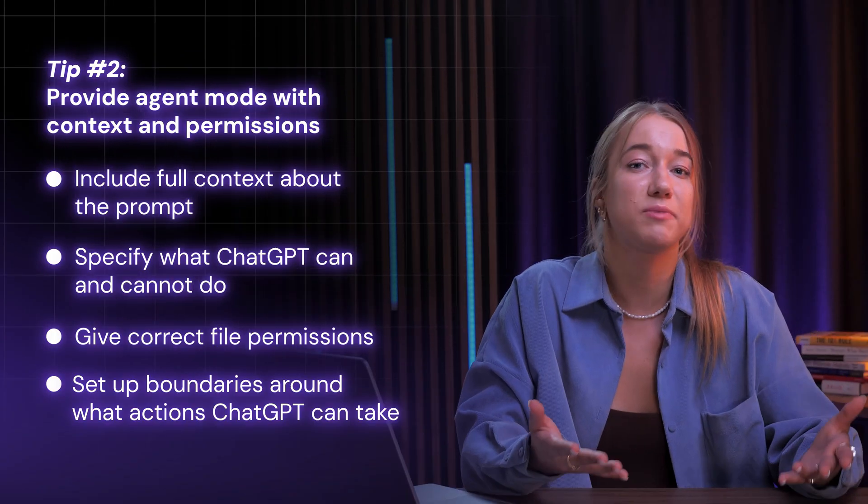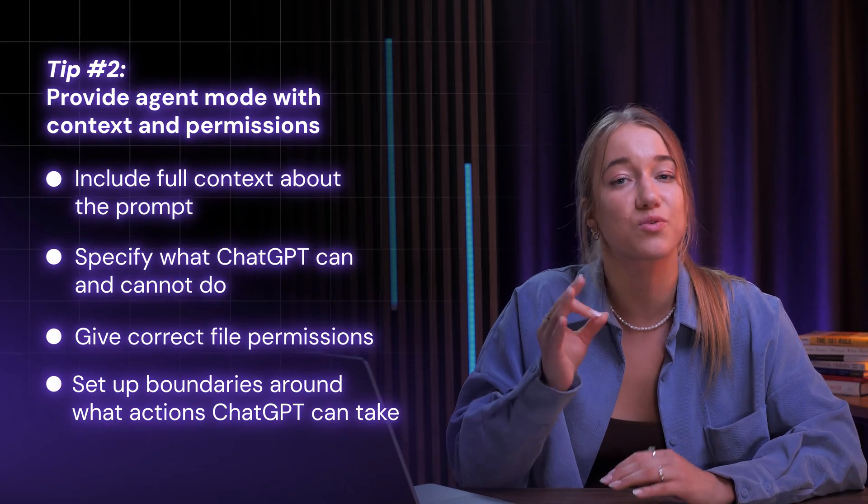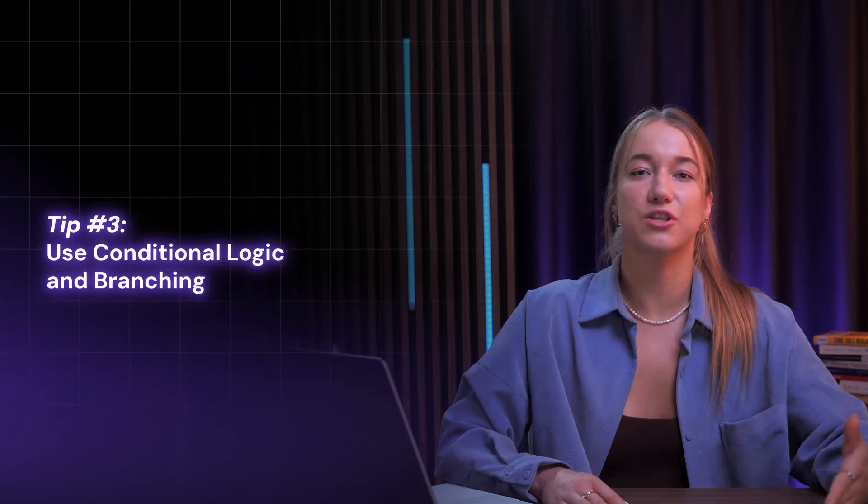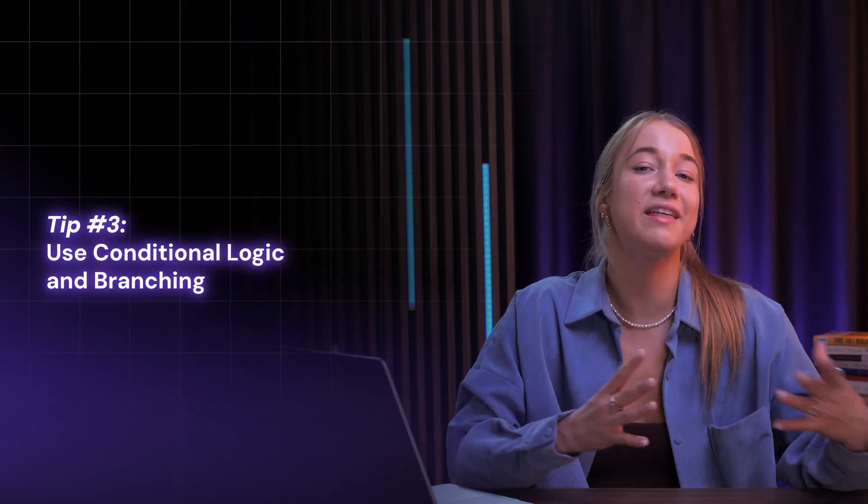To keep ChatGPT from running into a strange loop, you must really make it clear. Tip number three is using conditional logic, also known as if-and-then statements. These can really help increase efficiency in your prompts and make ChatGPT Agent act on its own reasoning without you actually needing to reprompt it. You can instruct ChatGPT Agent to take different paths based on what it finds, and this really saves time and makes the tool truly hands-free.